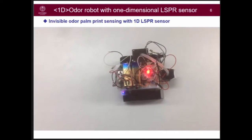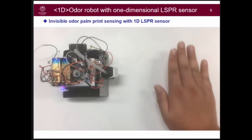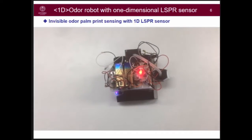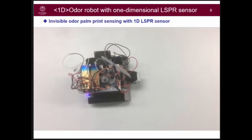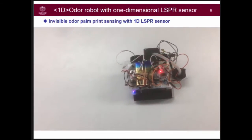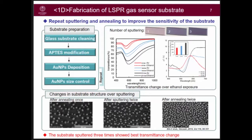This shows invisible odor palm print sensing with the 1D sensor. To fabricate the sensor substrate, we use sputtering and a layering method to improve the sensitivity. The result shows that the three-times-sputtered sample shows the best transmittance change.